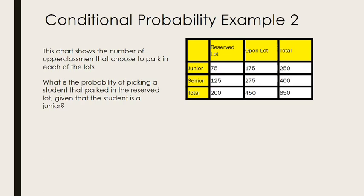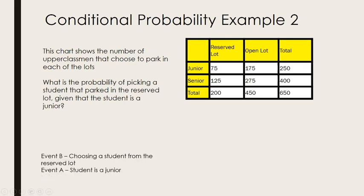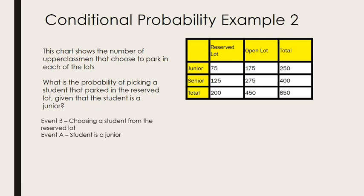Now we have another example. We've changed it around a little bit: what is the probability of picking a student that parked in the reserved lot given that the student is a junior? Notice the difference from the previous question — we have a different given part. Now the condition is that the student is a junior; this is our event A. So we're going to define our events differently.